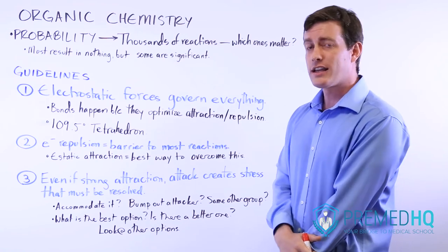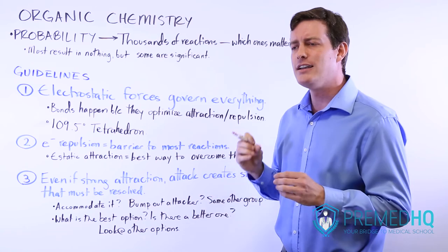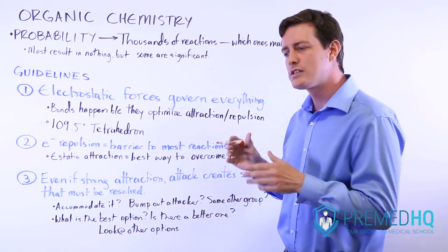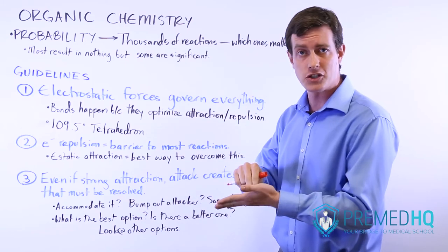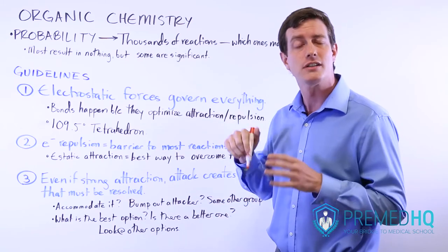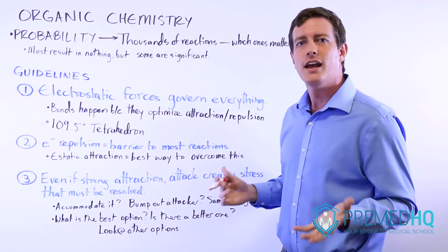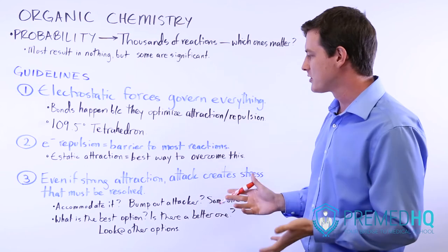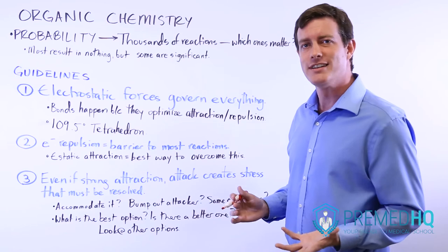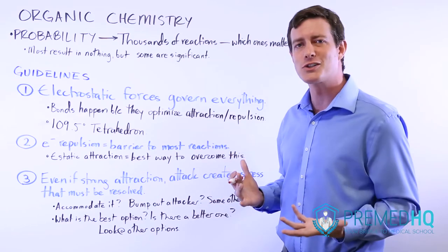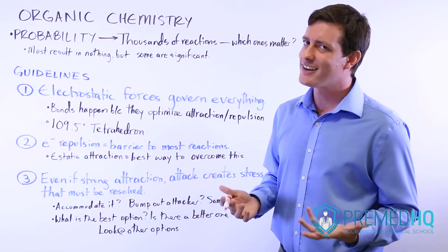With organic chemistry, a lot of times there are several possible ways a reaction could go. It's really important to realize what's most likely to happen if these two species interact. There might be an initial interaction or strong attraction first, but once that occurs, what happens to the rest of the system? You're looking at what is the best option and is there a better one? I say that paradoxically because the best option should be the number one option, but with organic chemistry...